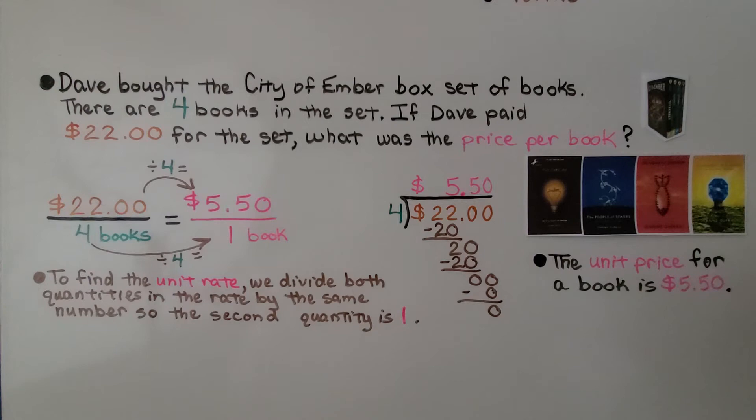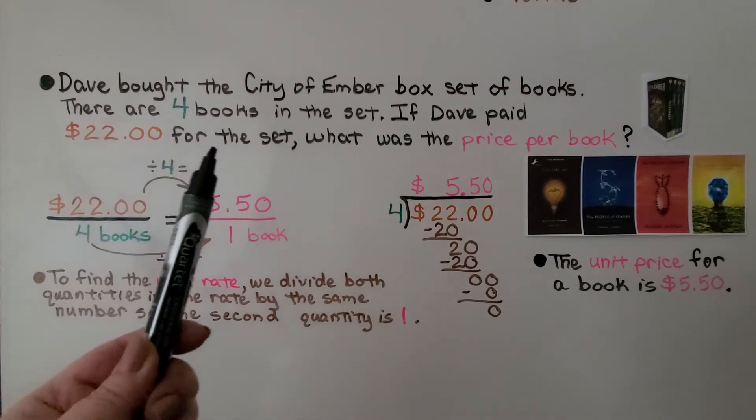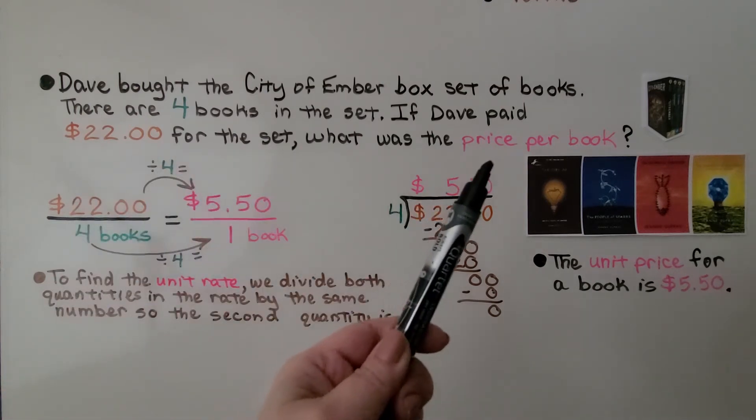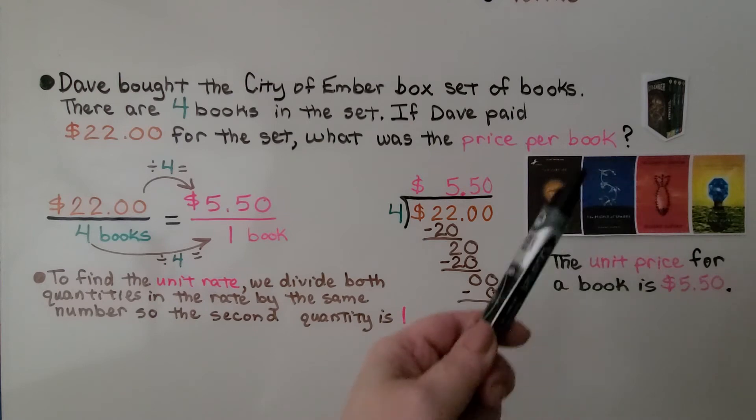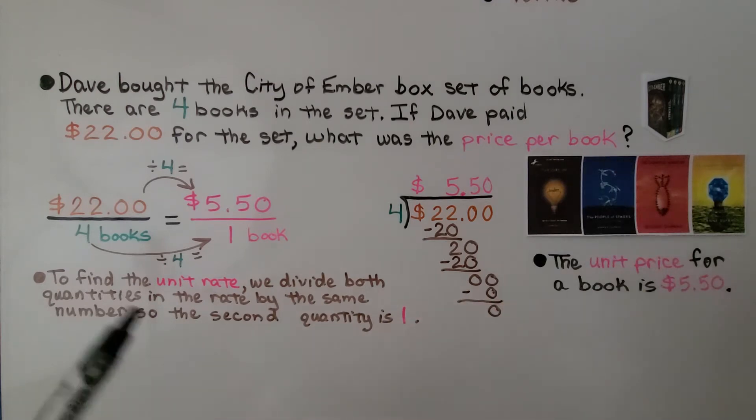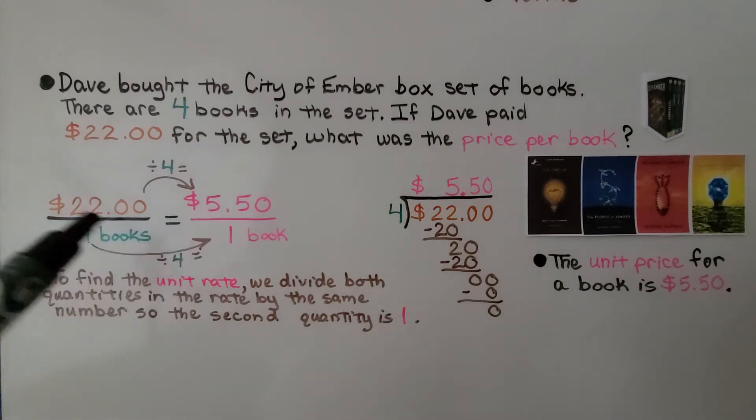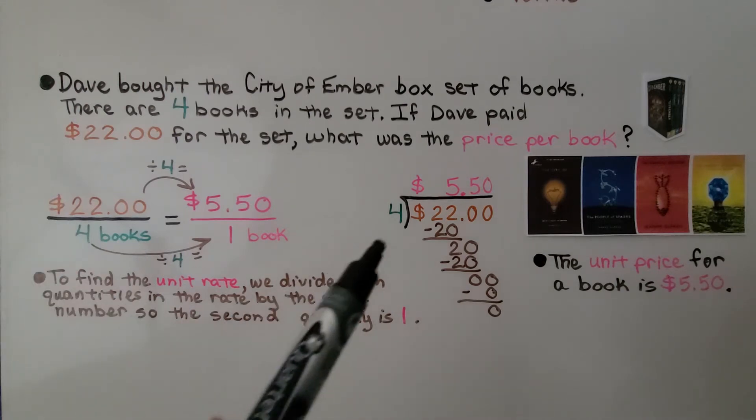Dave bought the City of Ember box set of books. There are four books in the set. If Dave paid $22 for the set, what was the price per book? Our rate is $22 for four books. We need to find the price for one book.